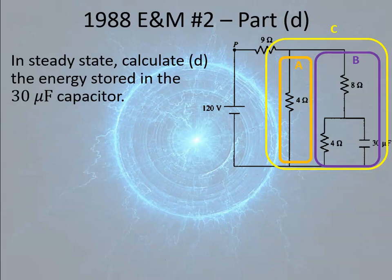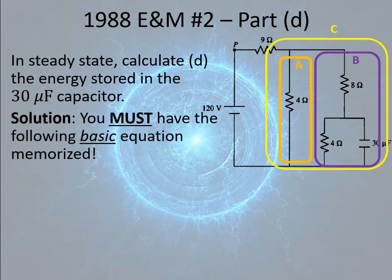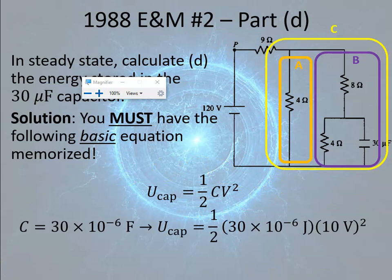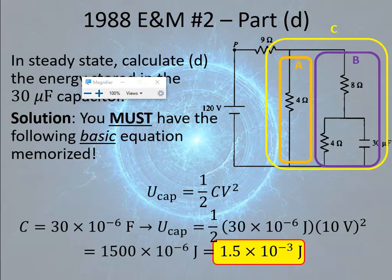Part D: in steady state, calculate the energy stored in the 30 microfarad capacitor. You must have the equation memorized: the energy stored in a capacitor is 1/2 CV squared. There are three forms: 1/2 CV squared, Q squared over 2C if you know the charge, and 1/2 QV. Plugging in with C equals 30 times 10 to the minus 6 farads and V equals 10 volts, we get 1.5 times 10 to the minus 3 joules.